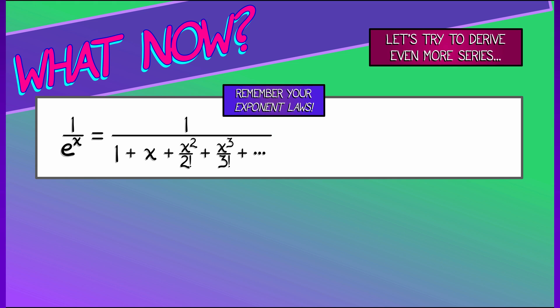Because 1 over e to the x is really e to the minus x. And what is e to the minus x? I know what e to anything is. In this case, e to the minus x is 1 minus x plus x squared over 2 factorial minus x cubed over 3 factorial plus x to the fourth over 4 factorial, and so on. It would be very instructive for you to write this out in summation notation in order to practice.